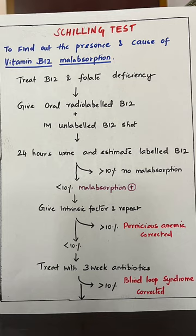If the repeat result is more than 10%, it indicates pernicious anemia. If it is less than 10%, treat with antibiotics for 3 weeks and repeat the test. If the result then comes back more than 10%, it indicates blind loop syndrome.